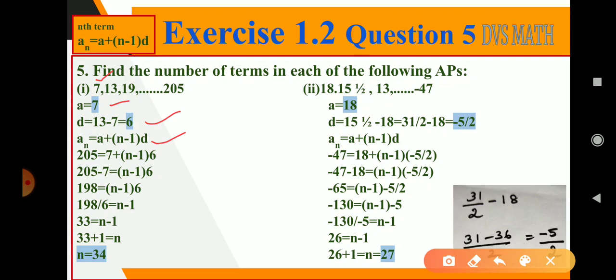So here an means last term, an term is 205, 7 plus n minus 1 as it is, 6. So now let us take 7 to the LHS, it becomes minus.